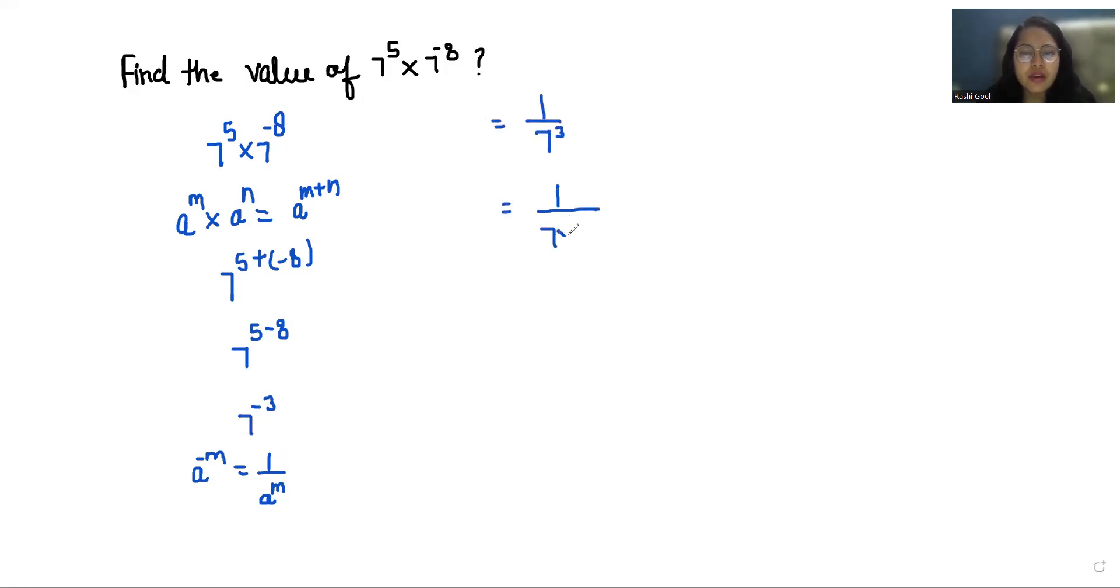That is 1 by 7 times 7 times 7, which is equals to 1 by 343. I hope it's clear and you find it useful.